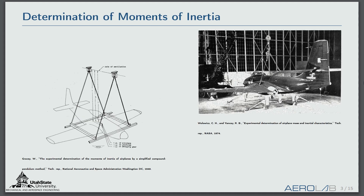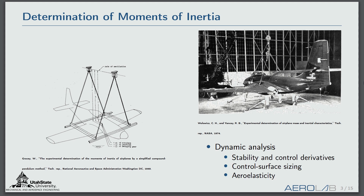Usually when we have a built aircraft, we'll stick it in some system — and at the risk of sounding Seussical — we'll use things called bifiler pendulums, trifiler pendulums, compound pendulums, knife edge fulcrums, and other devices. In the top right we have a system set up to determine the yawing moment of inertia, and in the bottom left a setup for the rolling axis inertia. We use these for determining stability and control derivatives from flight test data, control surface sizing during design, and initial aeroelasticity analyses.